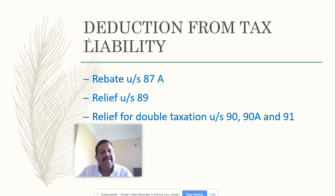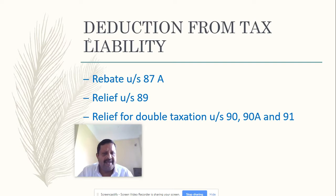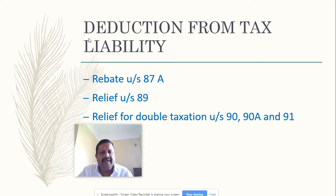Then we will discuss the deductions from tax liability. There are certain rebates given under section 87A, and in the recent budget there has been some amendment under section 87A. We will also see the relief under section 89 in case of arrears of salary, and the relief for double taxation under sections 90, 90A, and 91.